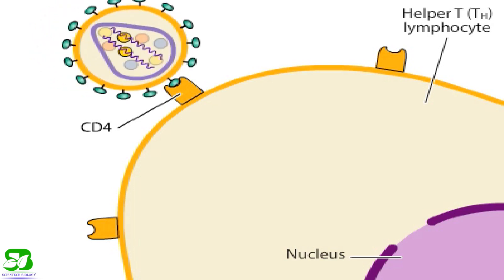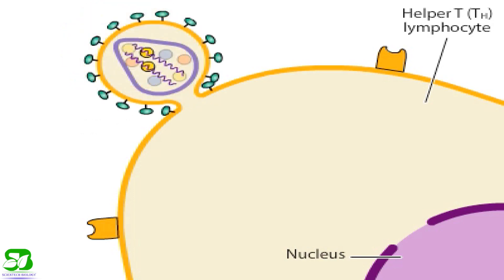The binding to CD4 and other cell surface protein called co-receptors, not shown here, allow the virus to fuse with the cell. The lipid membrane of the virus incorporates into the cell membrane while the viral core enters the host cell.